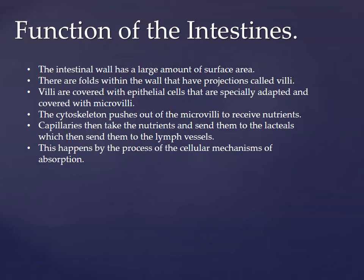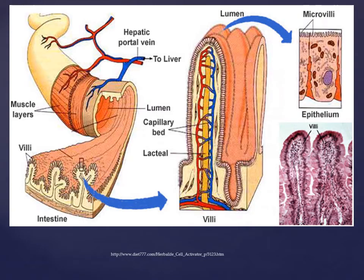This all happens by a process of cellular mechanisms of absorption. Here's a figure explaining that in more detail — we have the intestine on the left and the villi within the endothelium. The large yellow piece in the middle figure is the lacteal, surrounded by capillaries. On the right you can see the microvilli — the expansion of surface area keeps extending to receive the most nutrients as possible.